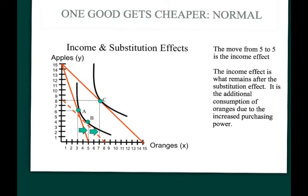We get this new point B. The move from a quantity of three to a quantity of five when moving from point A to point B is our substitution effect—the increase in oranges purchased given the new relative prices while still staying on the same indifference curve. It's found by shifting the new budget constraint back onto the old indifference curve and seeing the new optimal point. The difference in quantity of oranges—a move from three to five—is our substitution effect.